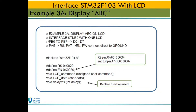Next, we declare the functions used in this program. We use three functions: the first is LCD command for sending a command, the second is LCD data for sending a character, and the third is delayms for delay in milliseconds. We define RS and enable, and declare the functions we use in this program.